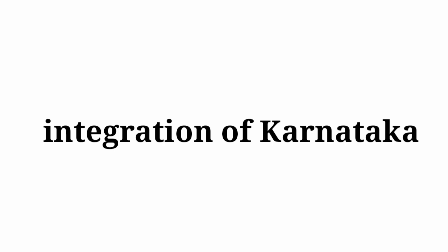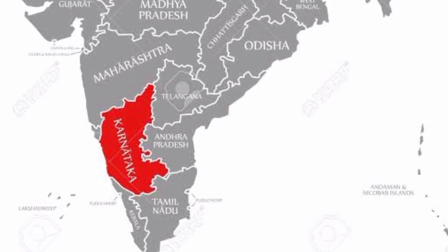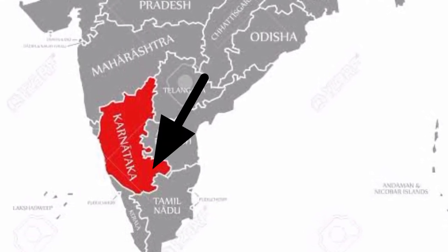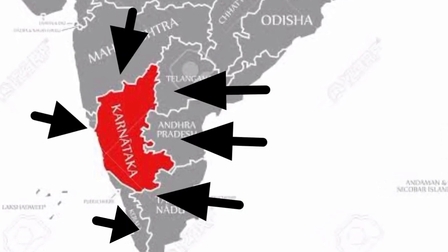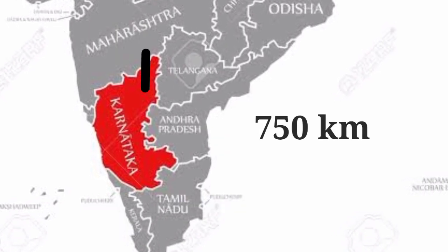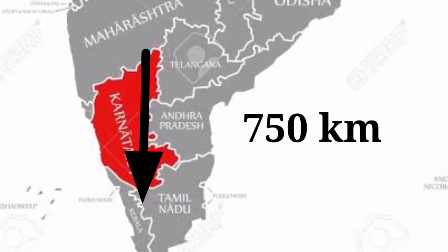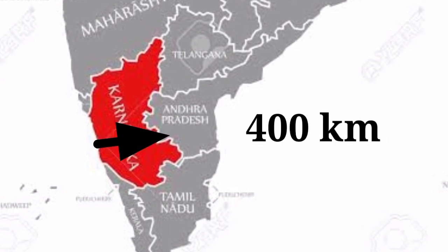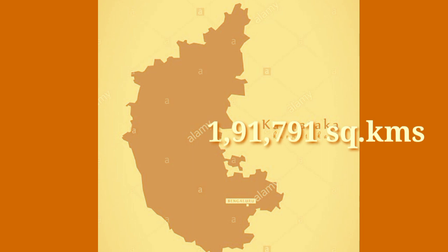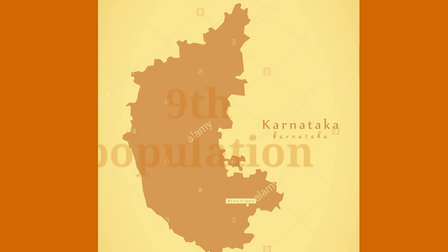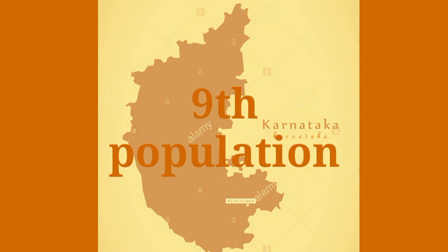Let us start today's class on integration of Karnataka. Karnataka is situated in the southwestern part of India. Its neighboring states are Goa, Maharashtra, Telangana, Andhra Pradesh, Tamil Nadu, and Kerala. Its length is 750 kilometers and its width is 400 kilometers. Its area is 191,791 square kilometers. It is the 8th largest state with regard to area. According to the 2011 census, it got 9th position with regard to population.